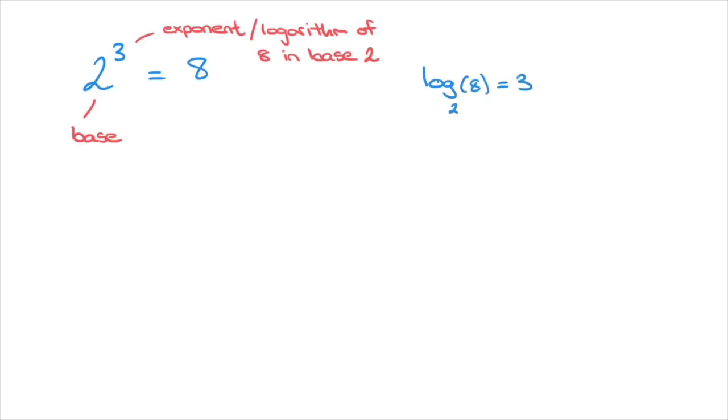And here's how to read this expression. First of all, log is short for logarithm, which remember is just another word for exponent or power. The 2 that we see here is the base that we're working with. And what log base 2 of 8 equals 3 is actually telling us is the power or logarithm to which we need to raise 2 to get 8 is 3. And that's all that this is actually saying.